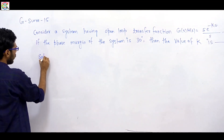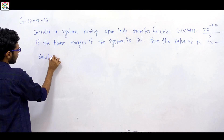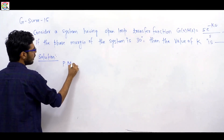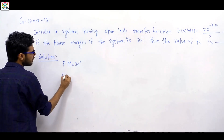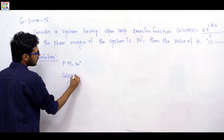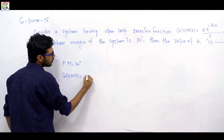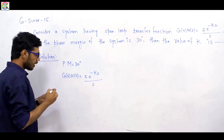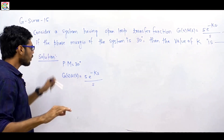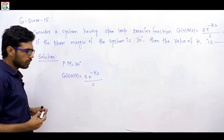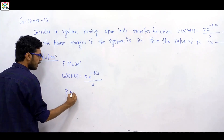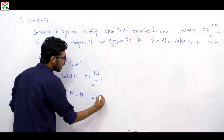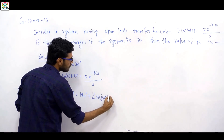Let me start the solution here. First, what has been given to us? The phase margin of the system is 30 degrees. The open loop transfer function is G(s)·H(s) = 5·e^(−ks) / s. Phase margin is simply 180 degrees plus the angle of G(jω)H(jω).